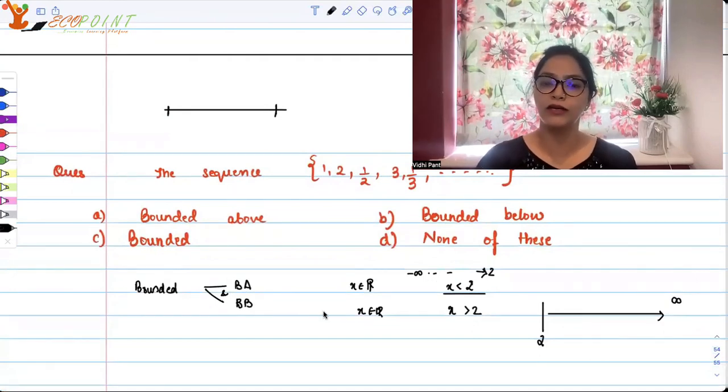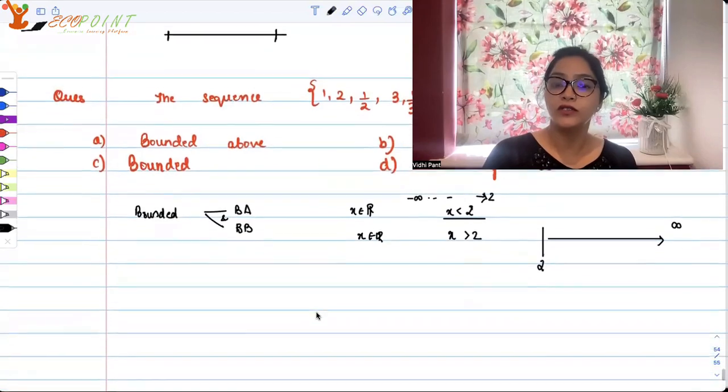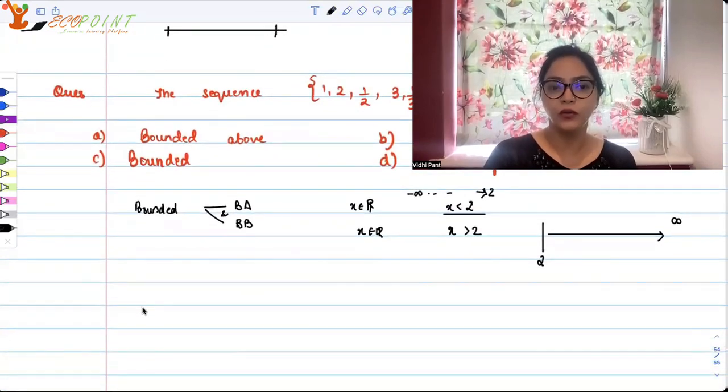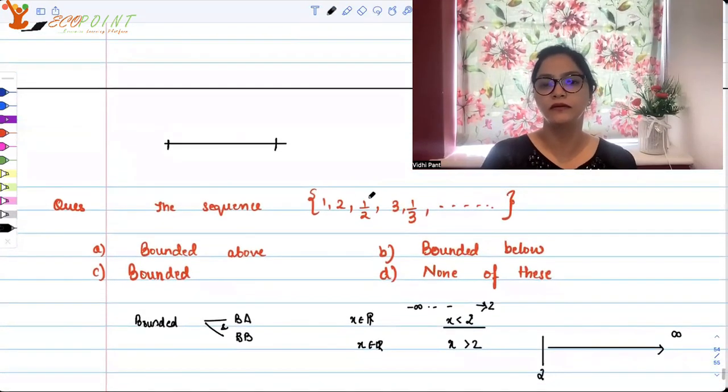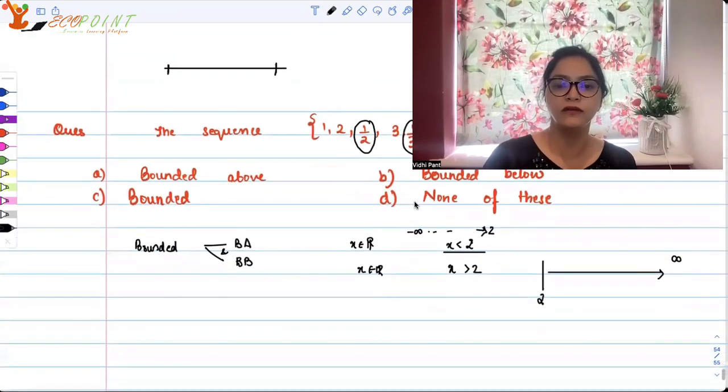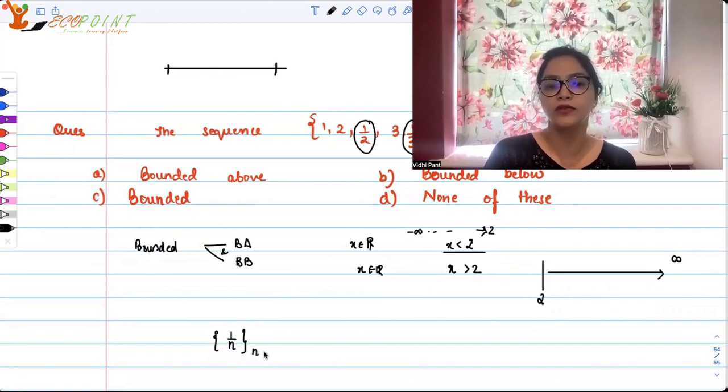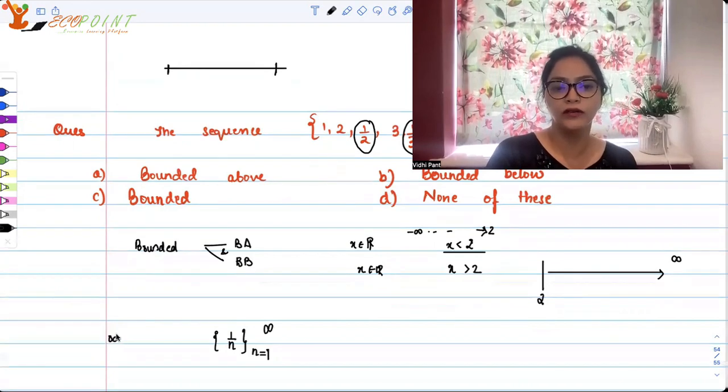So you have one, two, one by two, three, one by three. First of all, just try to see what the pattern is. What is the pattern? If you observe your first term, your third term, your fifth term, all the odd entries, if you observe, they are of the form one by n, where n goes from one to infinity. It can keep on going. So these are your odd entries.